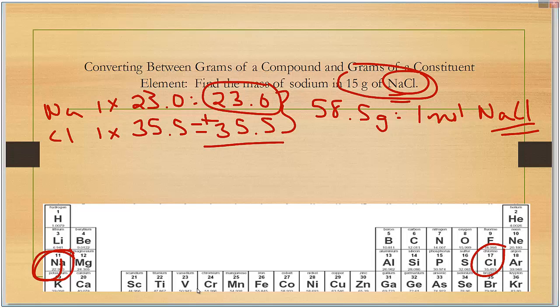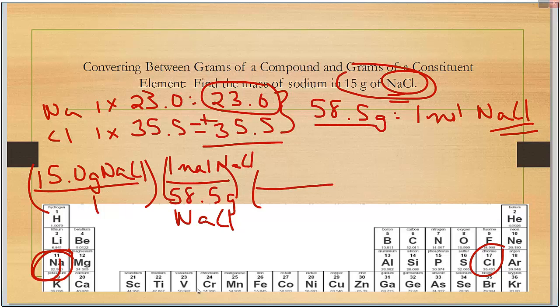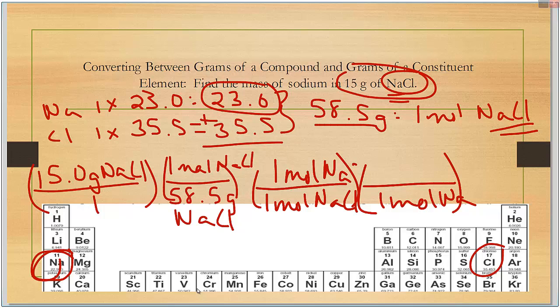Our beginning number is 15 grams. We're going from grams to moles first. In order to go from grams to moles, there's 58.5 grams of NaCl in every mole of NaCl. And then in one mole of NaCl, there's one mole of just Na. And then for one mole of Na, we look on the periodic table and it's 23. There's 23.0 grams of Na.